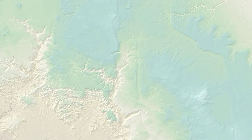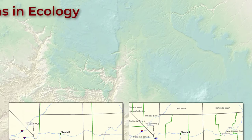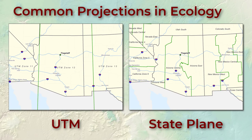In ecological research and management, most work is done in either UTM or state plane projection. When working in an area smaller than a few hundred miles across, both of these projections keep you very near the lines of intersection of the cylinder and the planet, so they do a good job maintaining shape, area, distance, and direction within that small local area. If your analysis area is larger than a few hundred miles wide, you'll need a different projection and will have to accept greater distortion.